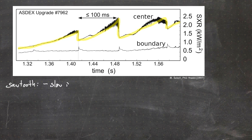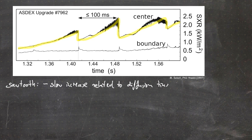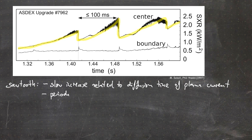The slow increase is related to the diffusion time of the plasma current, because it takes a while for the plasma current profile to evolve spatially — this is the finite diffusion time — which is why we only have a slow increase in the soft x-ray radiation followed by a sudden crash. This behavior has a periodic character.